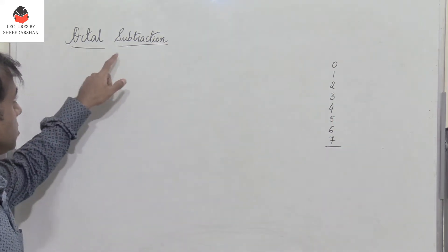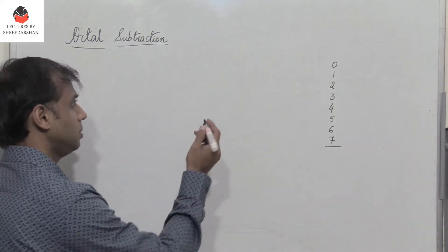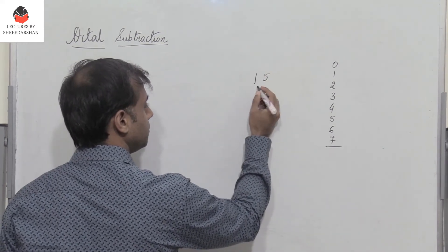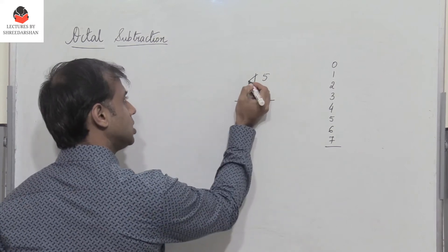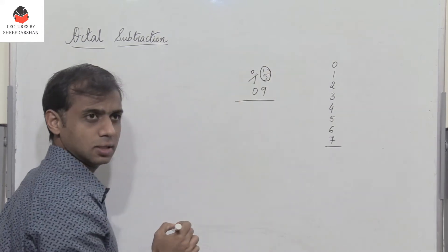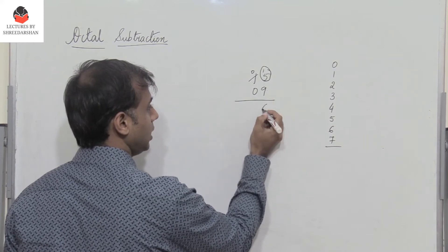Now in order to understand octal subtraction, let us revisit subtraction of decimal numbers. Say I subtract 15 and then I have 09. So we know that we actually take a borrow, we just write a 0 and we put a 1 here. So this becomes 15. So therefore you have 15 minus 9 and I get 6.